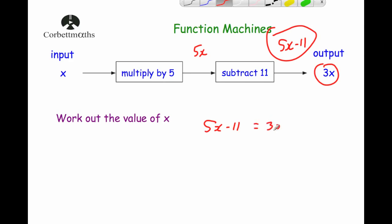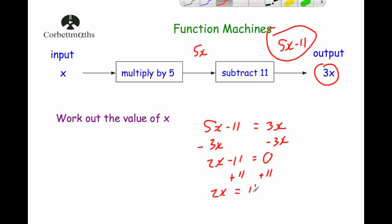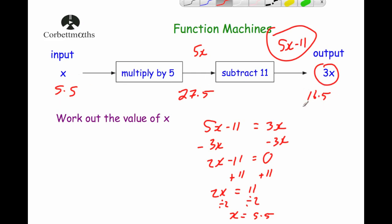Solving 5x minus 11 = 3x: subtract 3x from both sides to get 2x minus 11 = 0. Add 11 to both sides: 2x = 11. Divide by 2: x = 5.5. Let's verify: 5.5 multiplied by 5 is 27.5, subtract 11 is 16.5. Our input is 5.5 and our output is 16.5, which is exactly three times larger.